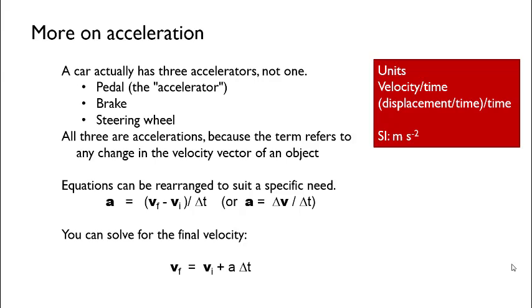Equations can be rearranged to suit a specific need. We already learned that acceleration equals changes in velocity over time, and of course a change in velocity is final velocity minus initial velocity over our time interval. Fortunately for us, we can solve that out. If we're interested in the final velocity, all we need to know is the initial velocity, then we need to add the acceleration times the time interval, and we'll find the final velocity.